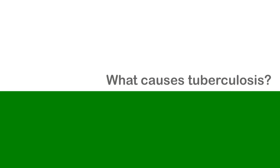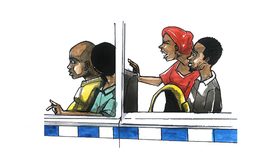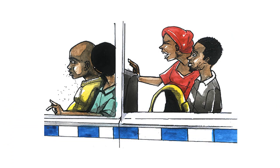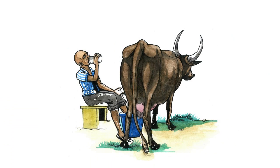What causes tuberculosis? Tuberculosis is spread from person to person through the air when coughing or sneezing, and in the process infecting others. It may also be caused by drinking unboiled milk, normally from an infected cow.